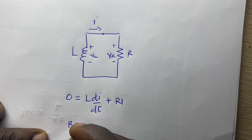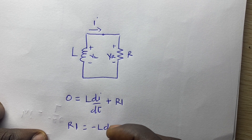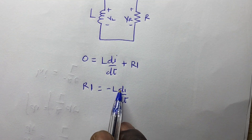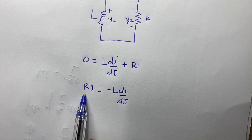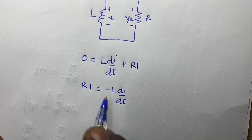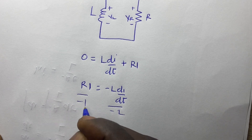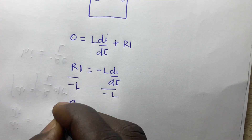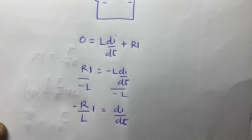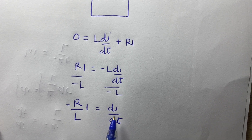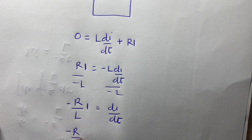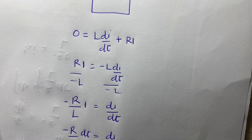So now we can make one term stand alone, so we can get Ri is equal to minus L di/dt. And now we are interested in the current i — that's the current that flows from the inductor to the resistor. So from here, we can choose to make di/i stand alone. We divide both sides by negative L to get negative R/L multiplied by i is equal to di/dt. And since we are interested in the current, we cross-multiply to get negative R/L dt is equal to di/i.